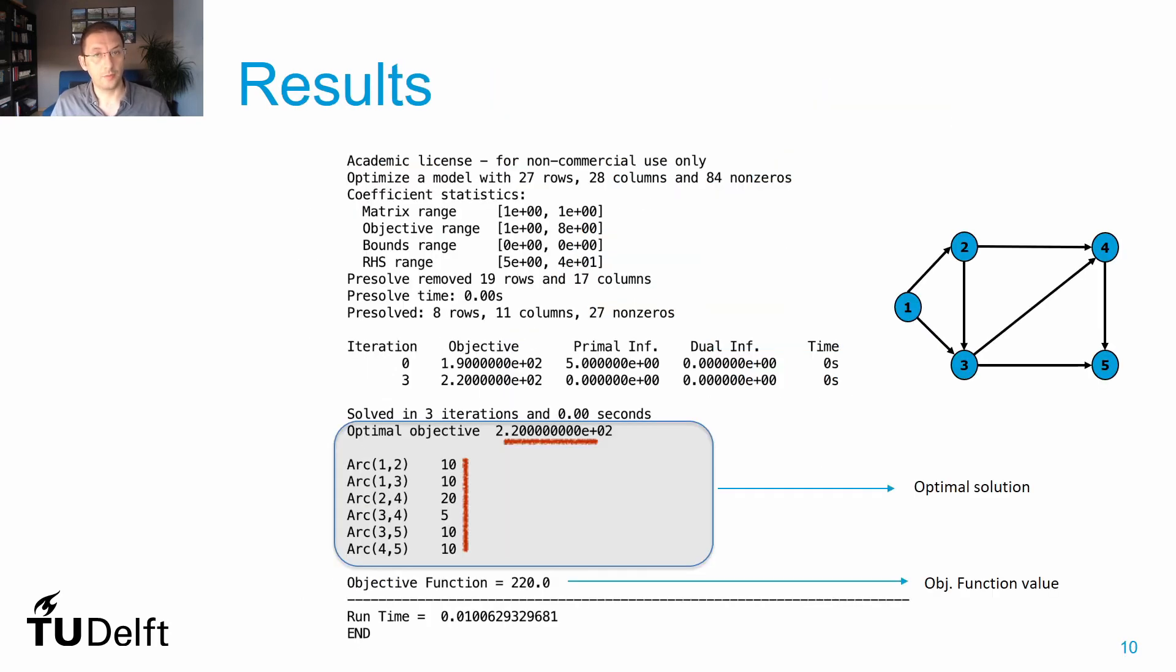The next step is to print the optimal solution. Here, in a very simple way, I have plotted the objective function 220 and the values of flows in each one of the arcs. So you can see that I have 10 items being transported in arc 1-2, 10 in 1-3, 20 in 2-4, and so forth. And I know that the runtime was 0.01 seconds, so it was really fast. It's a very simple and small toy case, and this is it—we do have our result.